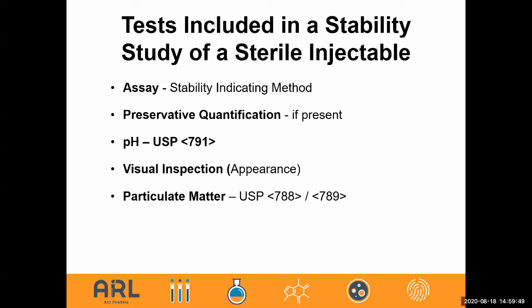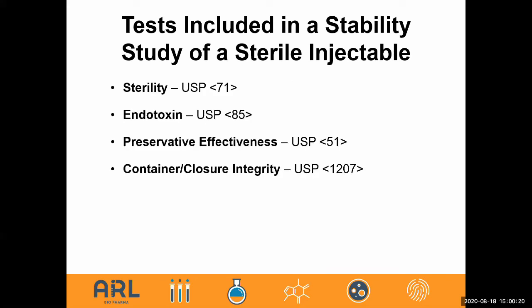Some tests included in a stability study for a sterile injectable include: assay, preservative quantification — for example, benzyl alcohol — pH, visual inspection, and particulate matter. These are all documented tests that should be performed on stability for a sterile injectable. Additional tests might include microbial testing such as sterility from USP 71, endotoxin, preservative effectiveness, and container closure integrity.